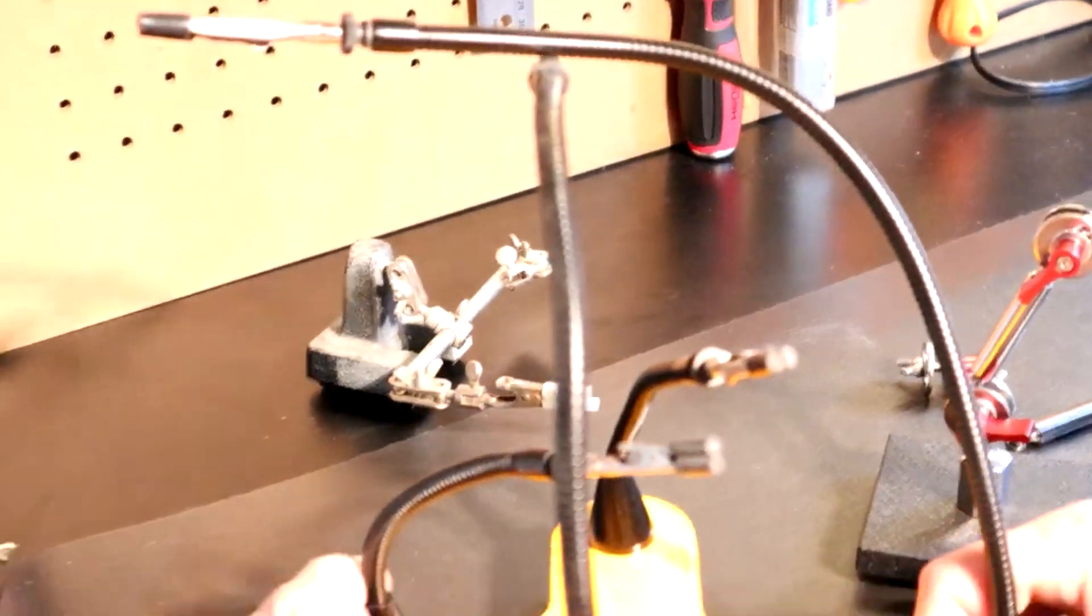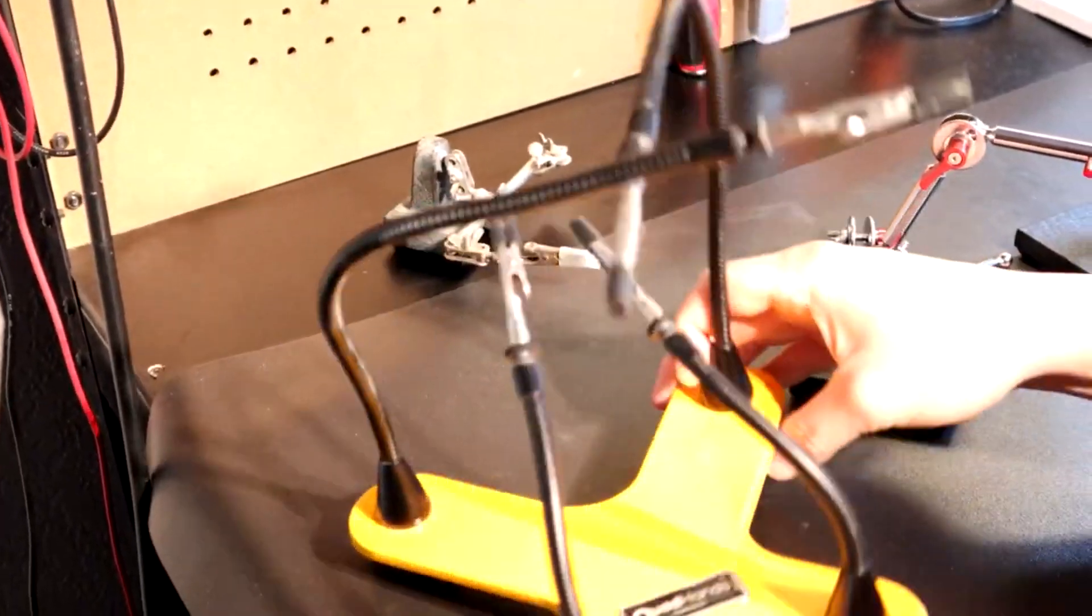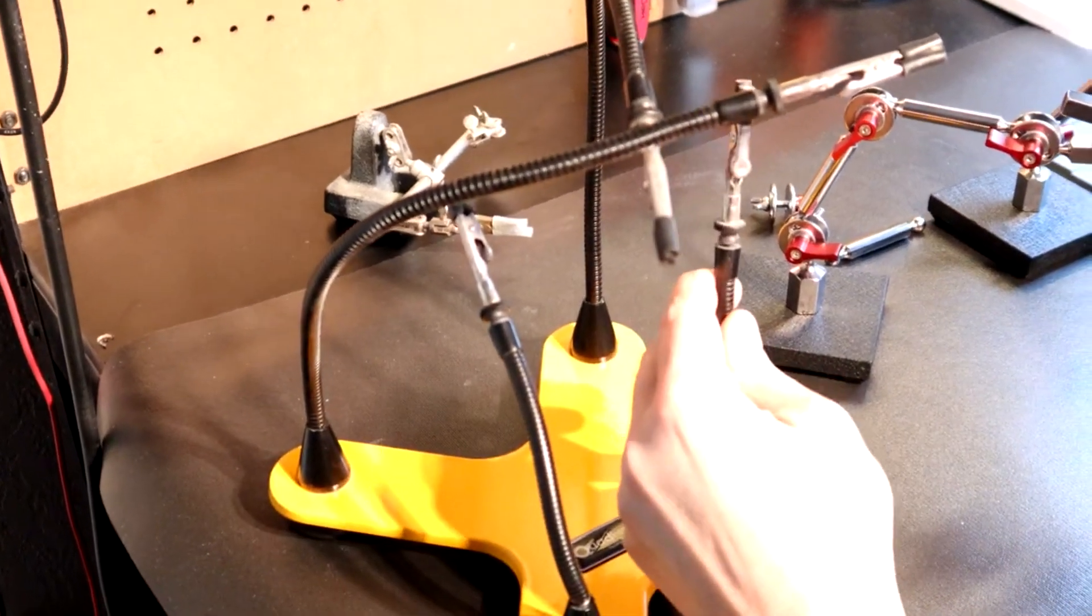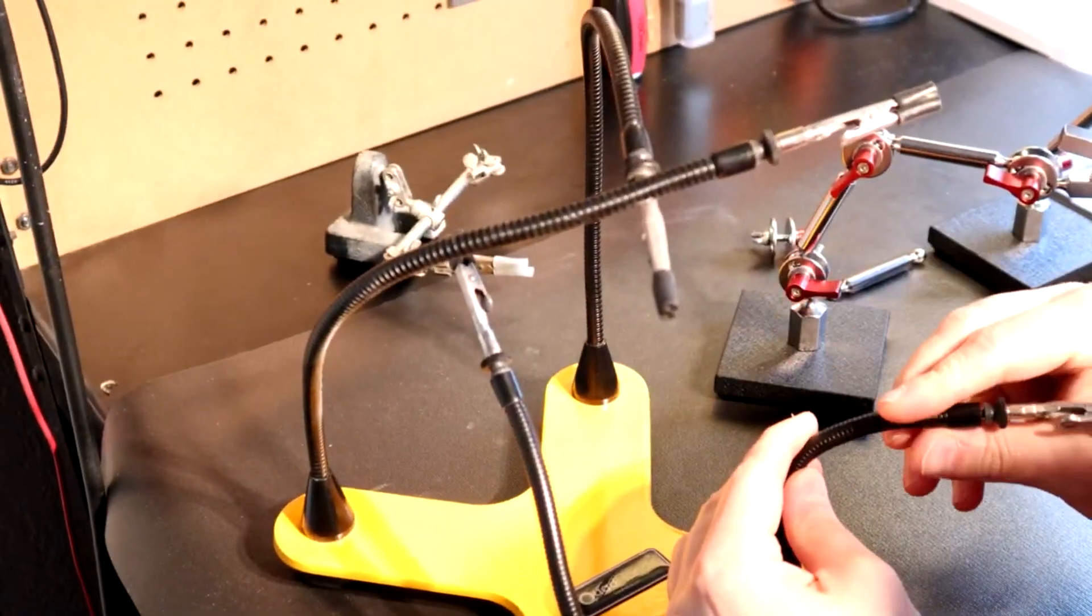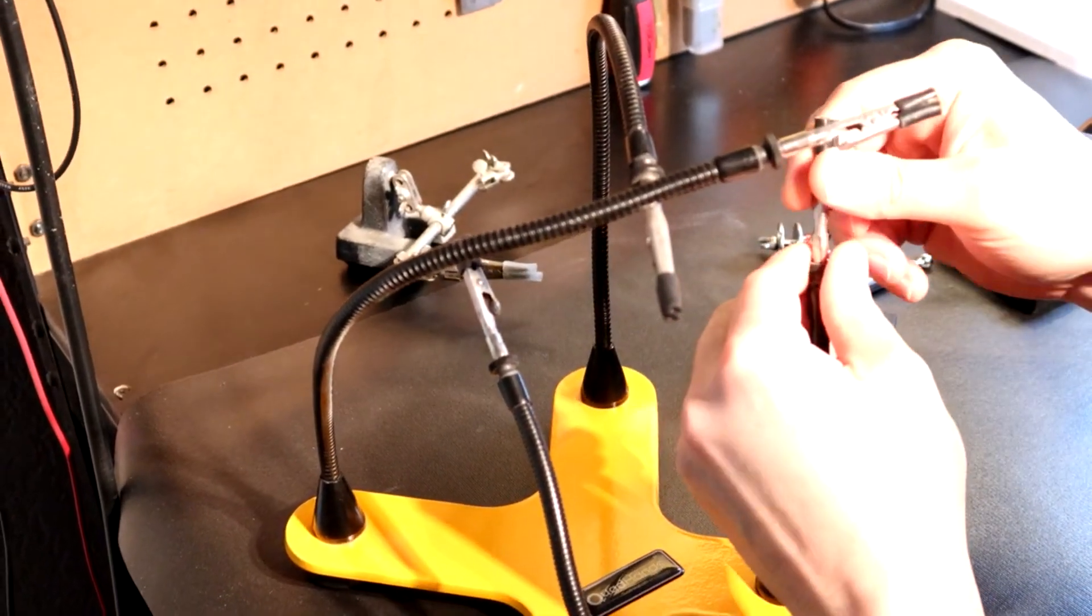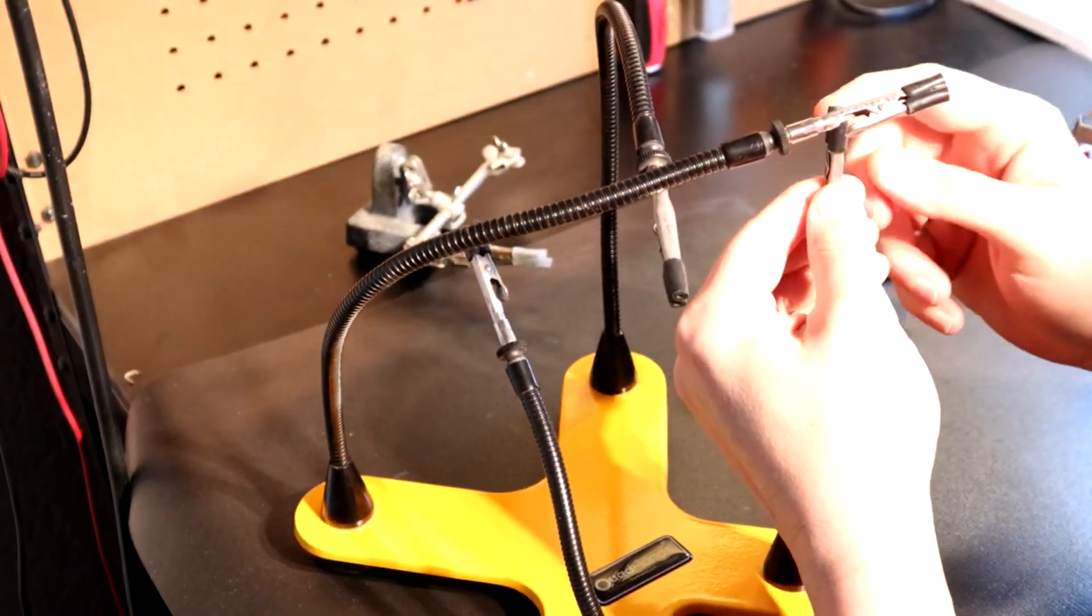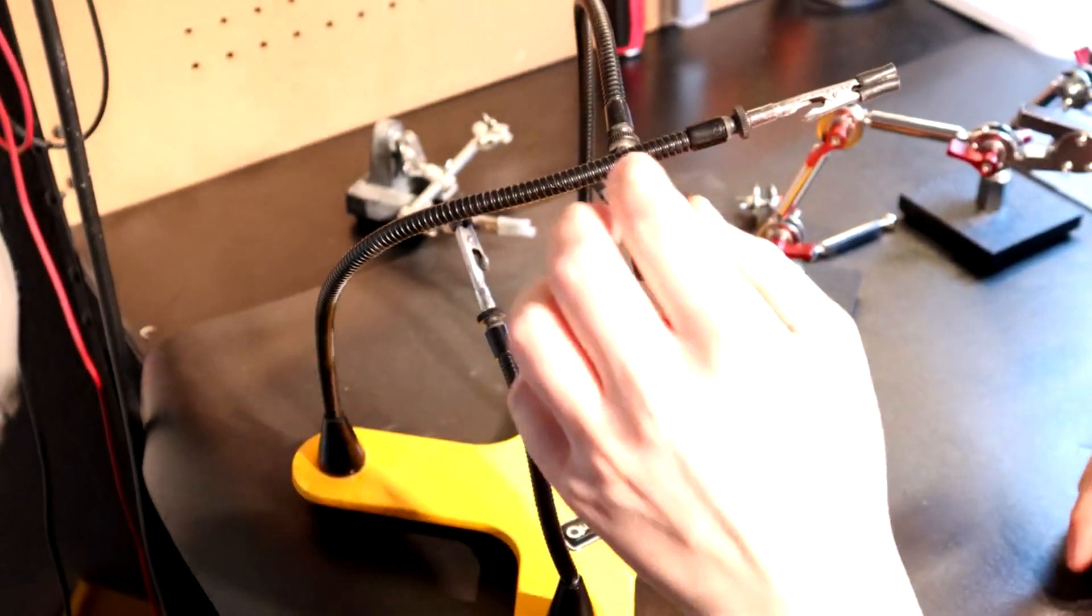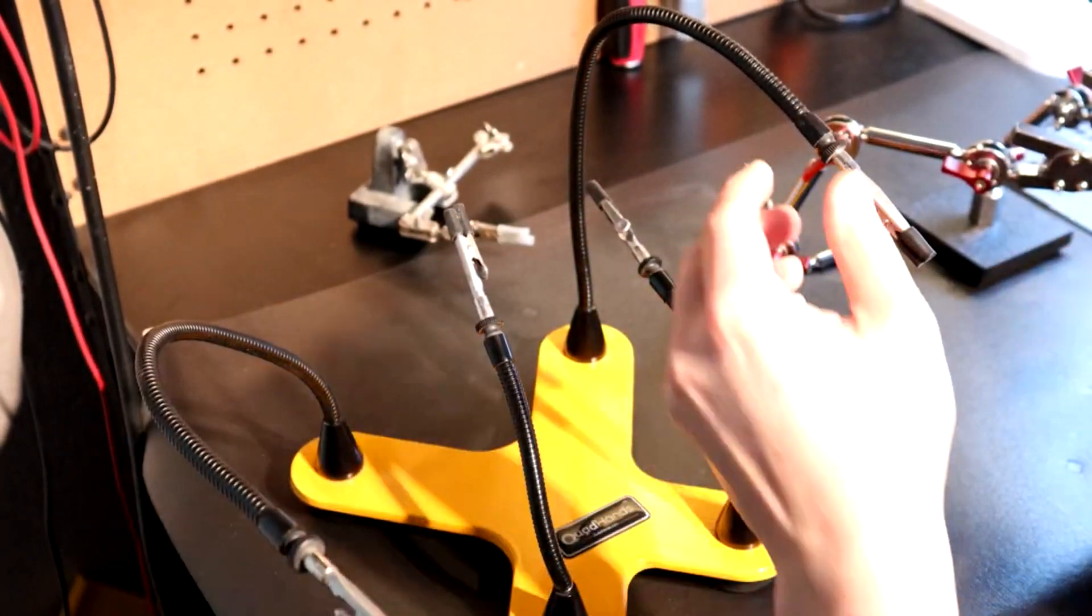A more traditional, more up-to-date version is something like you see here, which is known as quad hands. They use these metal aluminum arms that articulate in different directions and you can rotate the alligator clips. We're still dealing with alligator clips and, just to put it mildly, these all but suck.